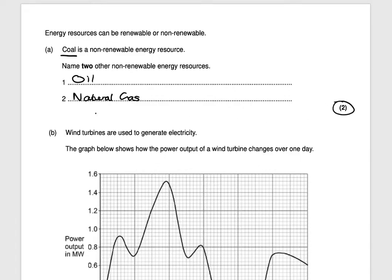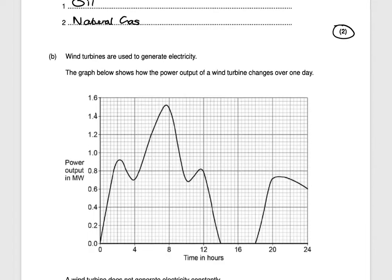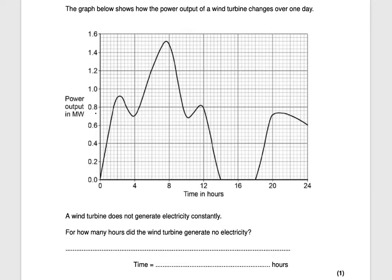The next question states: wind turbines are used to generate electricity. The graph below shows how the power output of a wind turbine changes over one day. We have time on the x-axis and power on the y-axis. It says a wind turbine does not generate electricity constantly — for how many hours did the wind turbine generate no electricity? When the power output is zero, it's at this point, which is 14, and then at this point, which is 18. So 14 to 18 is four hours — four marks.